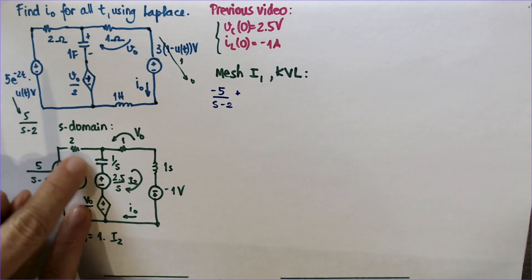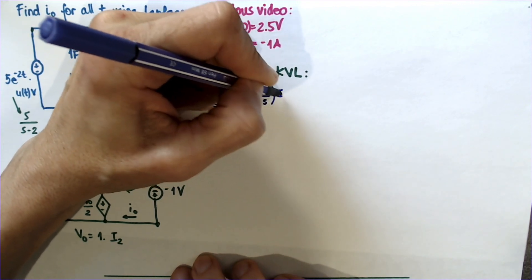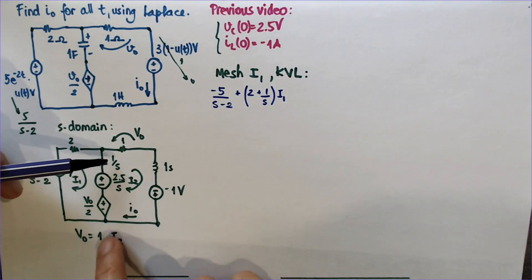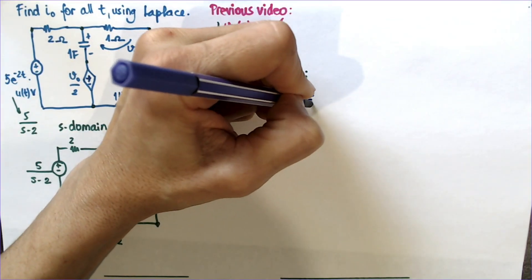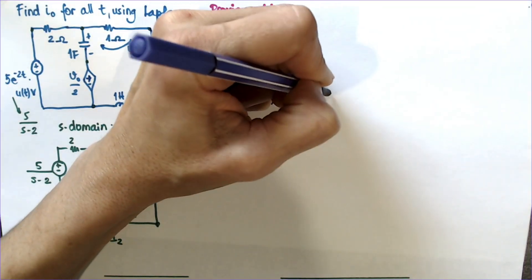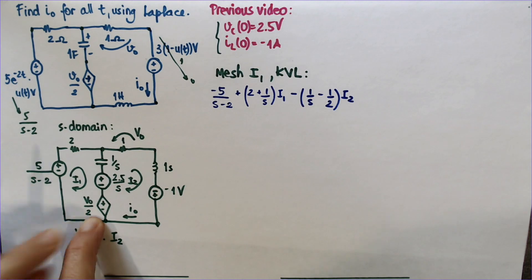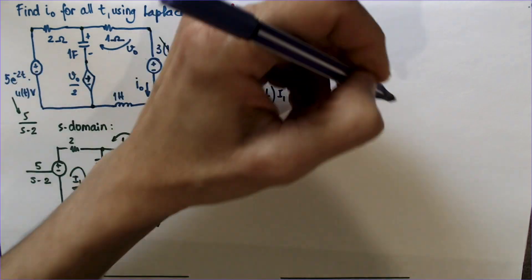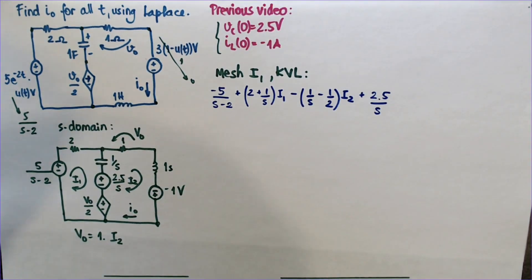And now everything that has I1, I'm summing here: 2 plus 1 over s, I1. And now everything that has I2, I'm going to subtract. And it turns out this is also I2. So it's minus 1 over s minus half I2.